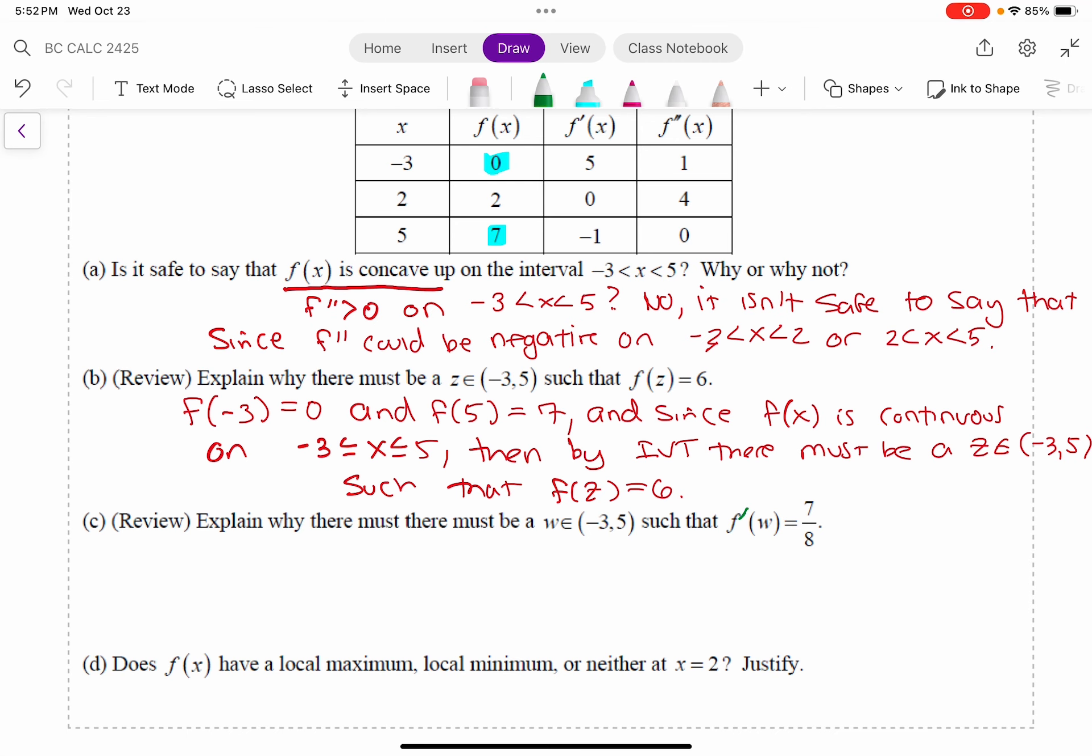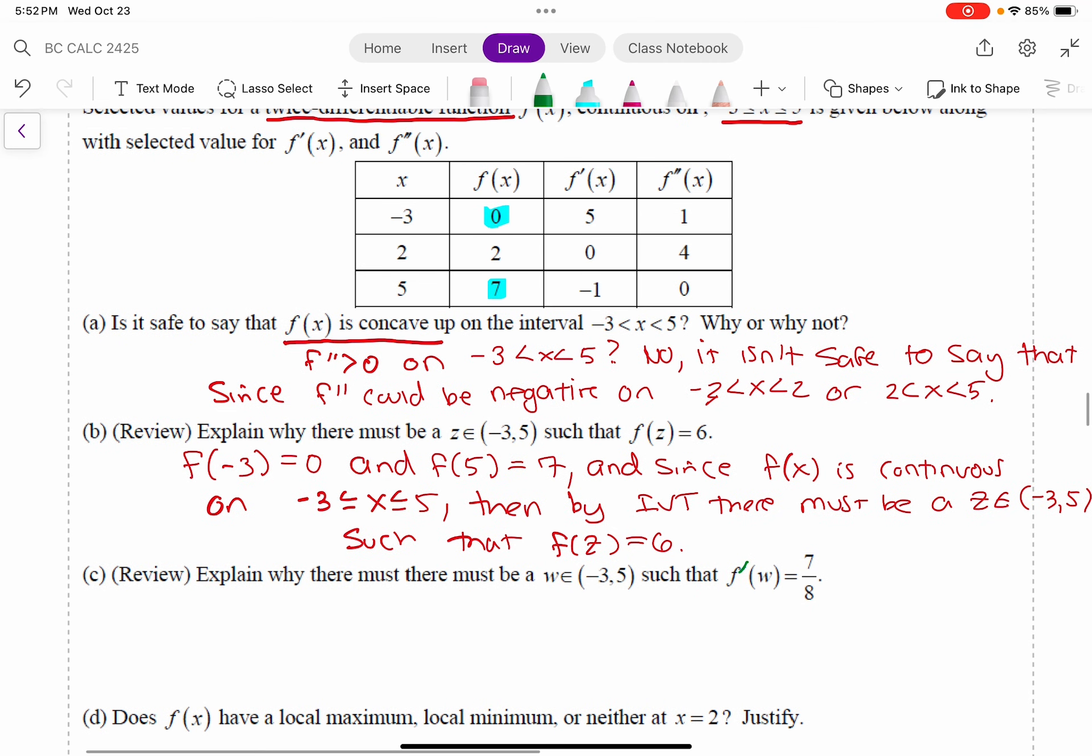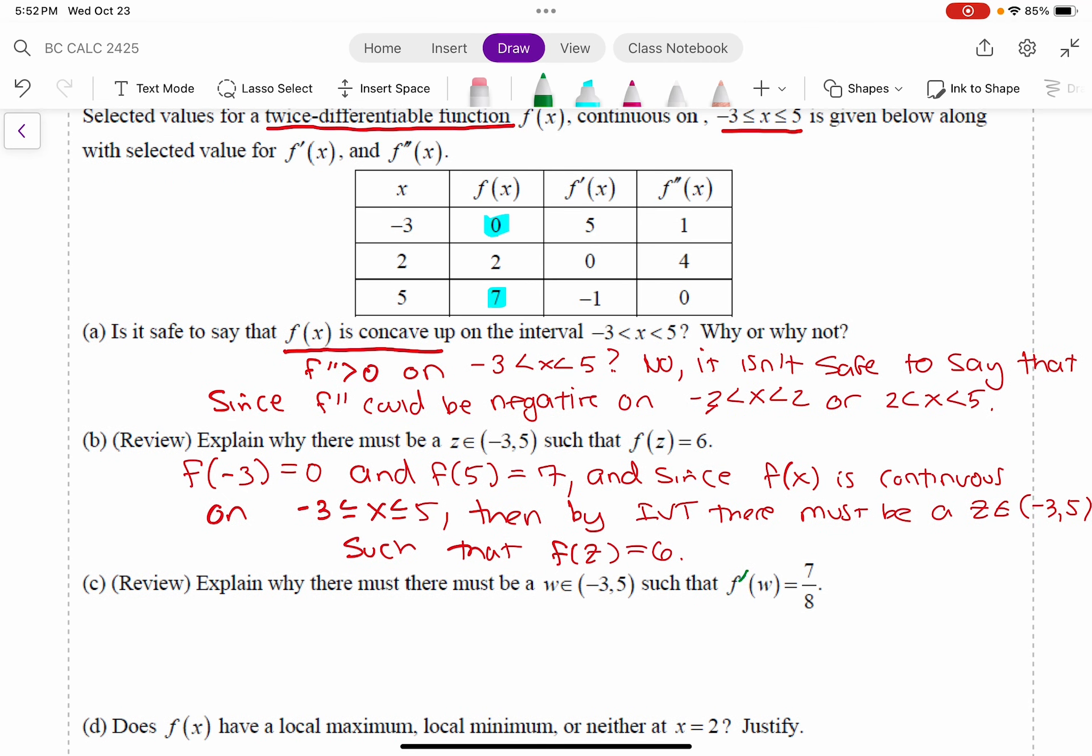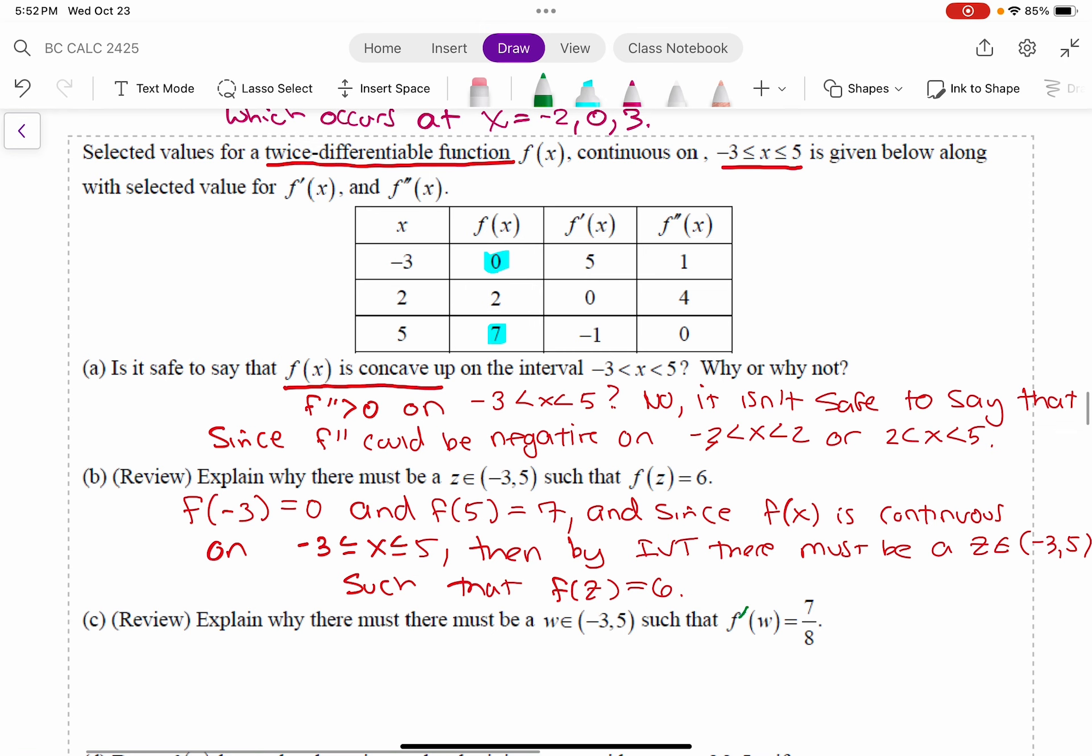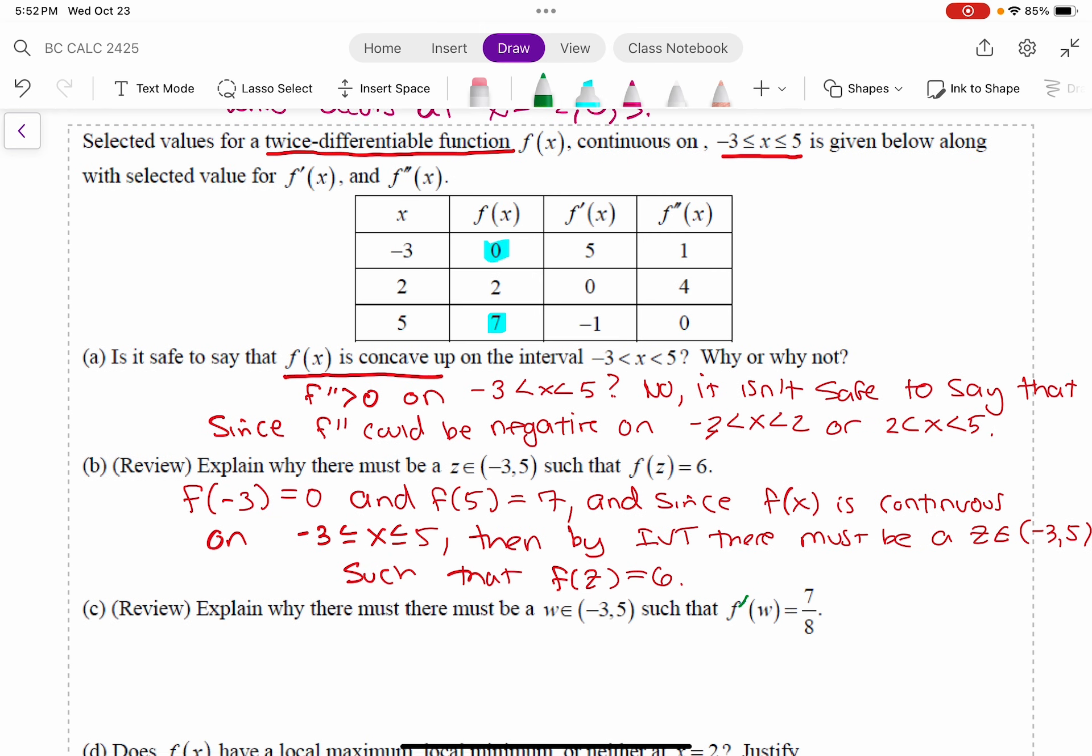And so, what's the mean value theorem say again? And it says, if we're looking at a function that is continuous on a closed interval and differentiable on the open interval, then there's a place where the derivative equals the slope of the secant line that links up the two endpoints. I guarantee that's what's going to happen here. So let's just restate the mean value theorem.